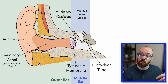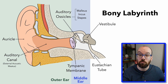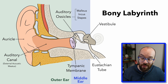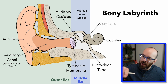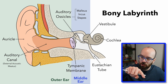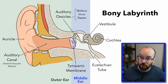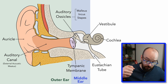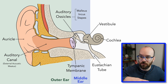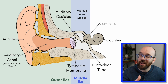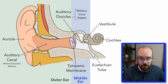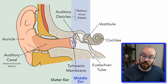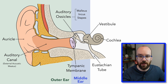The stapes is going to push into a structure called the bony labyrinth, which has three parts. One part is called the vestibule, and the next part is called the cochlea — the spiral or snail-shell-shaped part of the bony labyrinth. The cochlea's job is to take these vibrations from the stapes and convert them into action potentials, or nerve signals, that get sent to the brain.